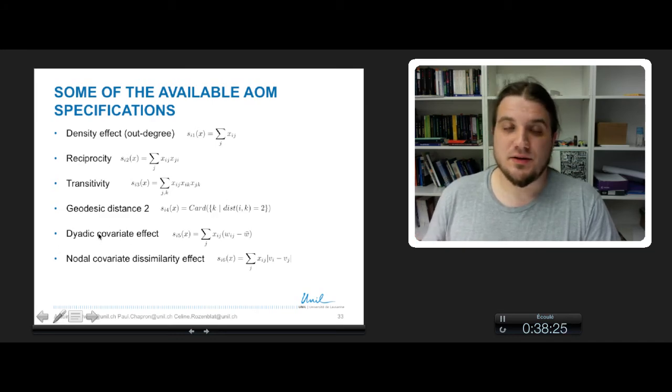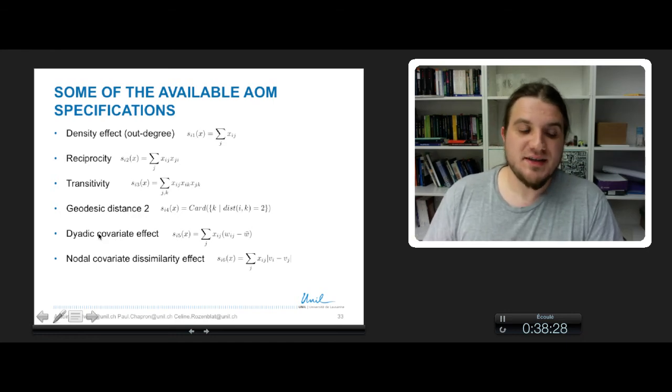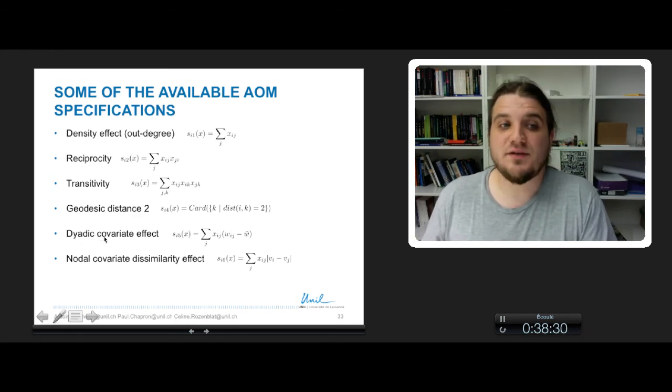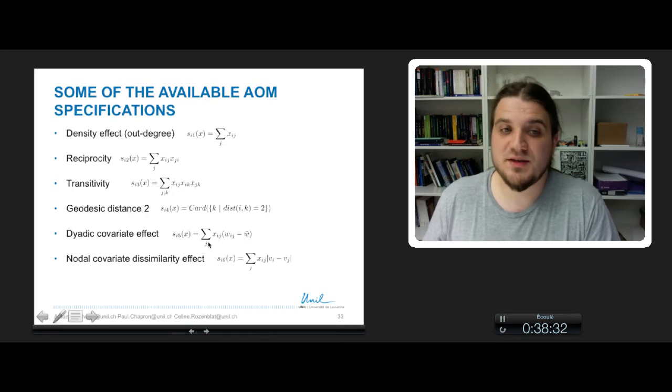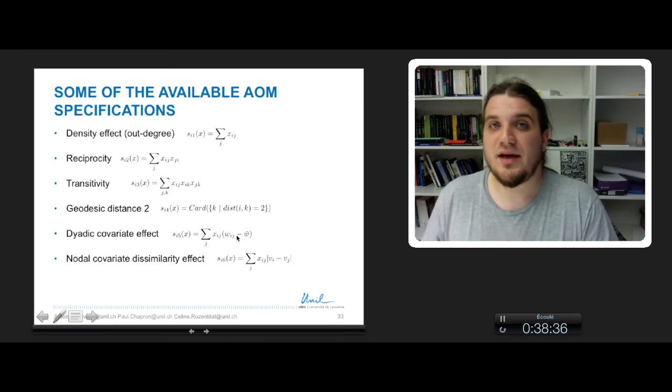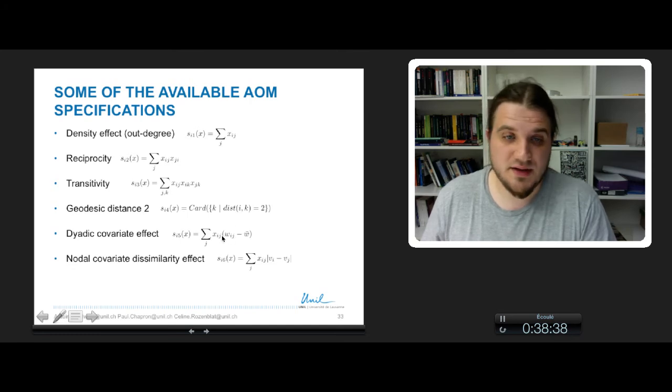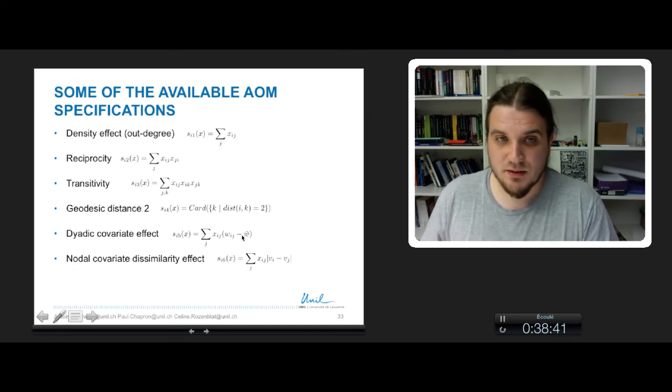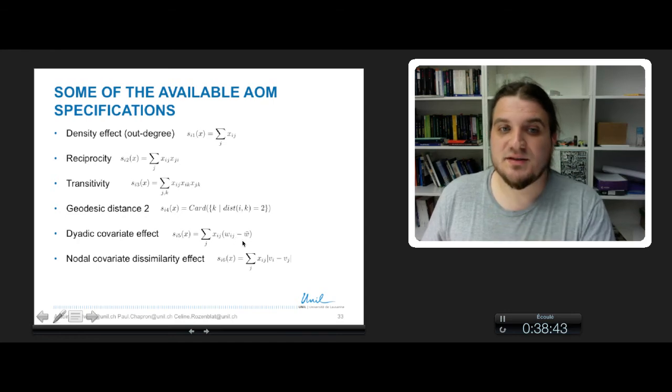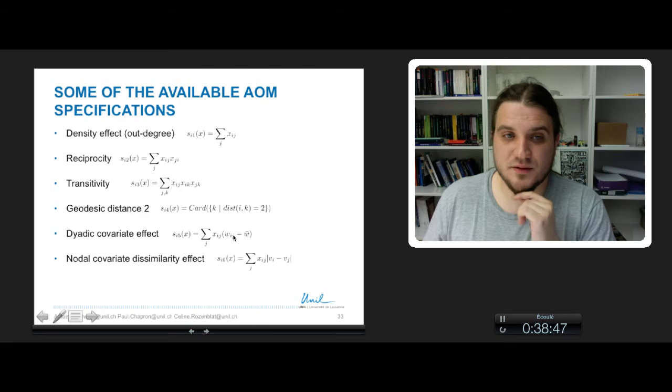And you can use some covariate effect, for example, dyadic covariate effect, so for every dyad between i and its neighbor j, you can take into account the effect of a variable, of the link, a link variable that has been here centered. We have removed the mean value of the variable.